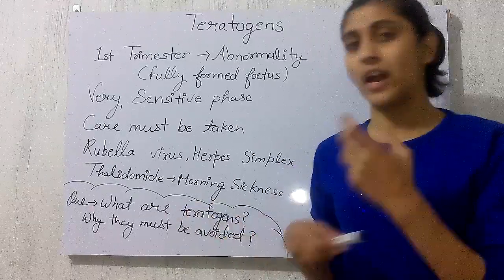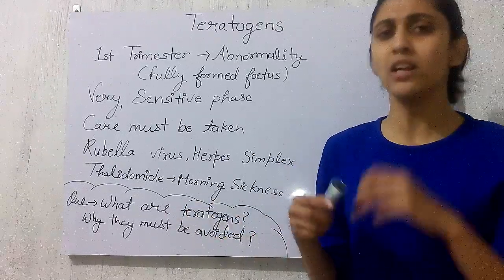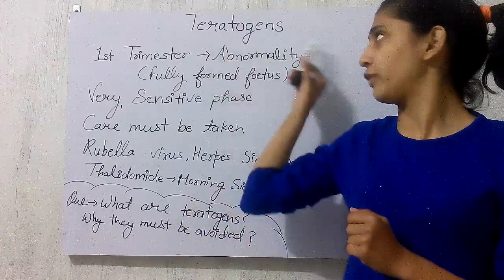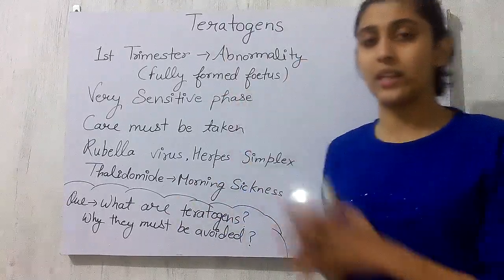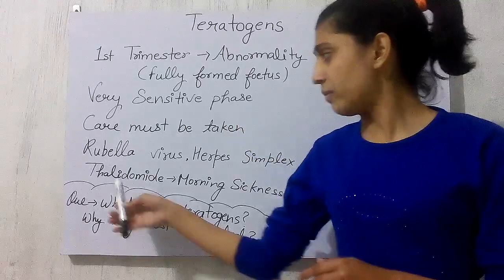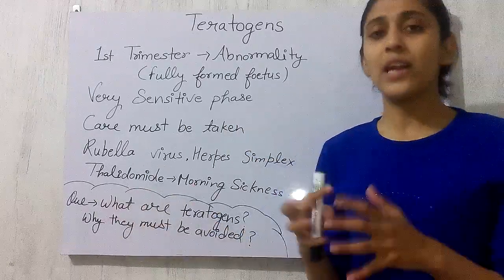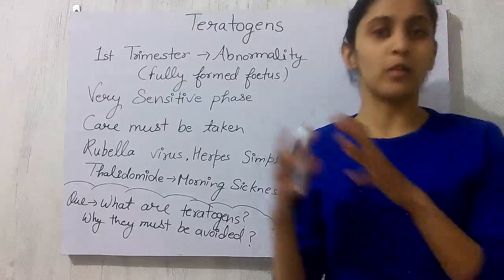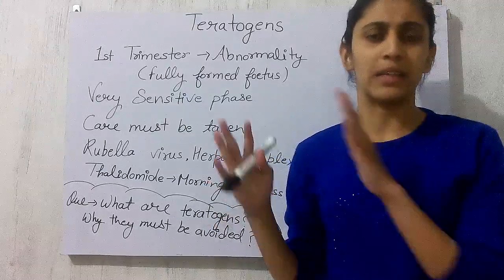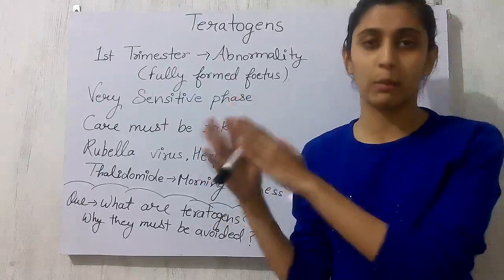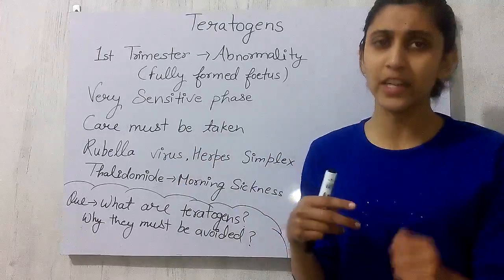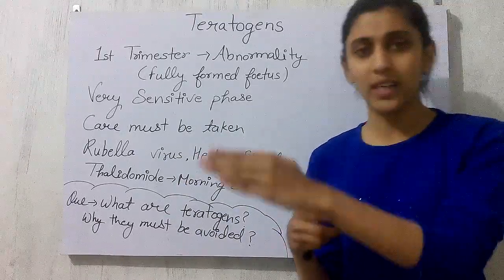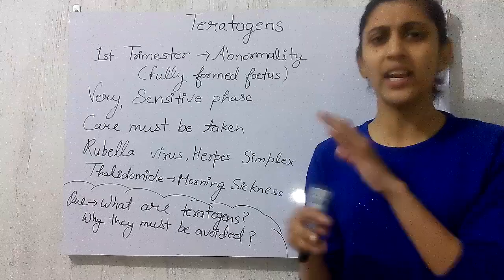Teratogens can cause morning sickness and nausea in the mother as well. To treat some kind of side effects of teratogens, the doctor will give the lady a drug named thalidomide. So this is the answer to today's question: teratogens are agents which cause malformation to the developing fetus and also cause morning sickness and nausea in the mother.